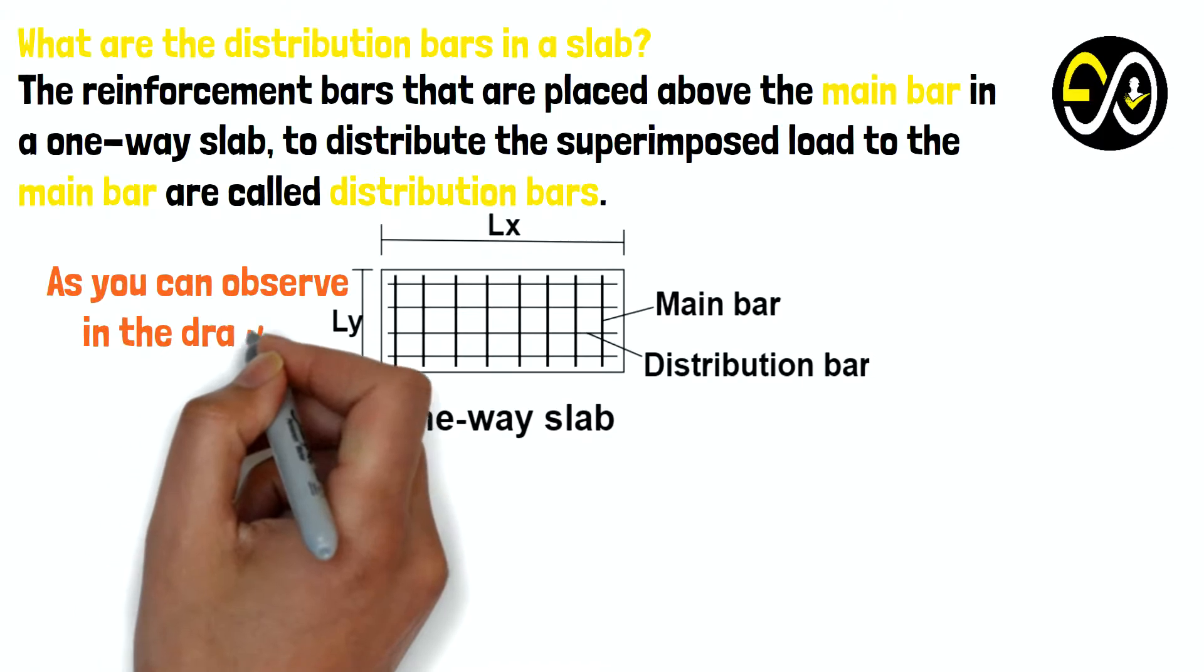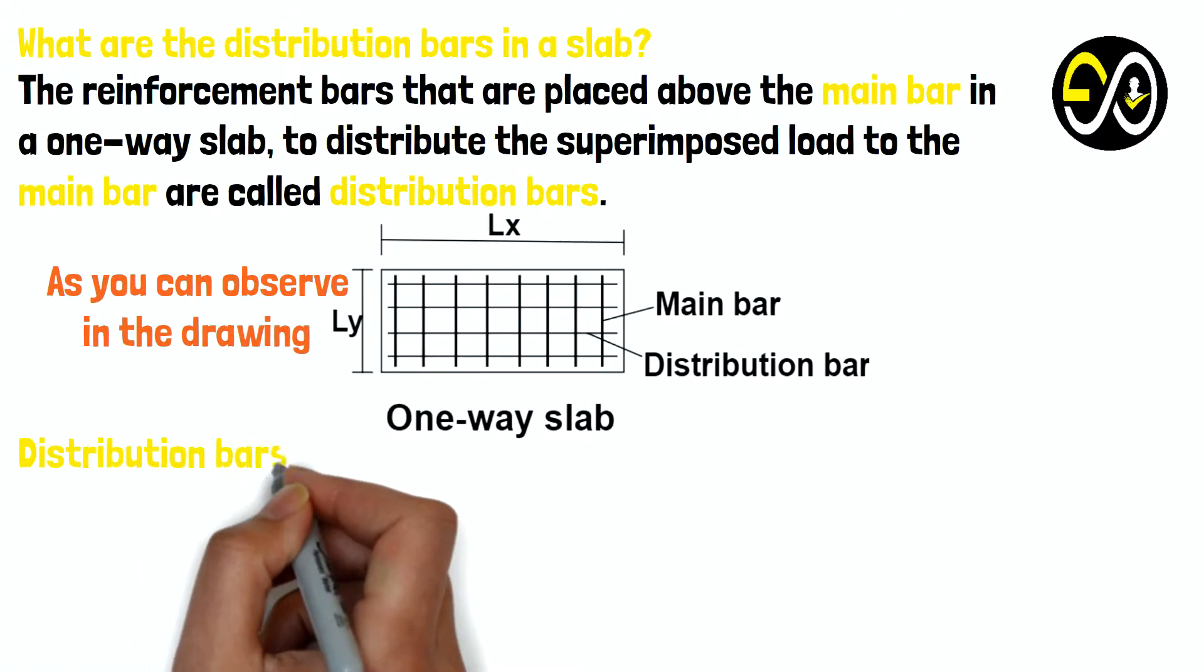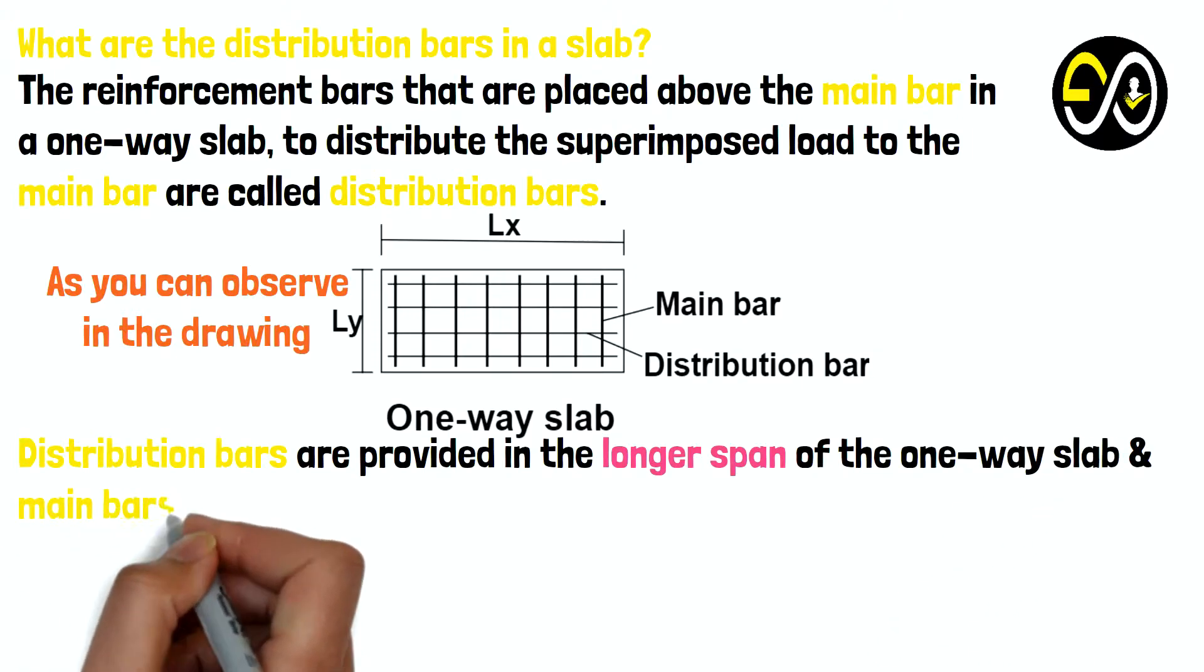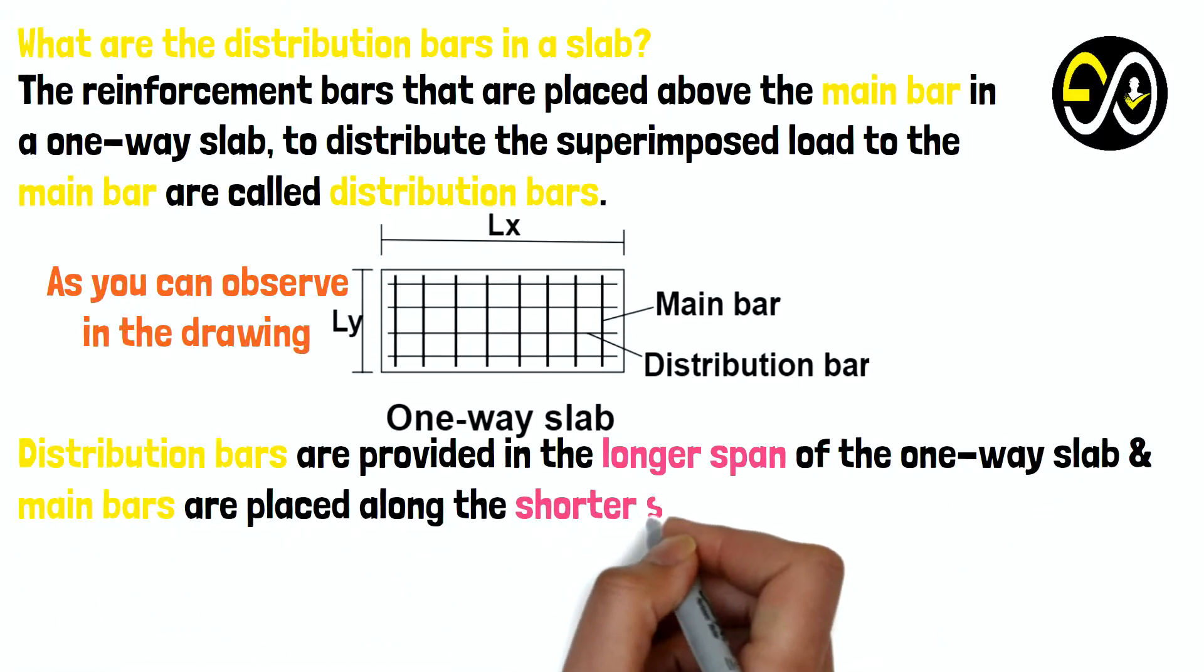As you can observe in the drawing, distribution bars are provided in the longer span of the one-way slab and main bars are placed along the shorter span of the slab.